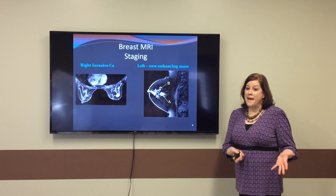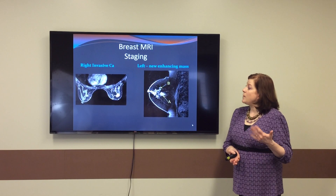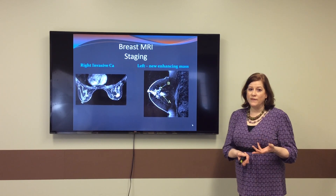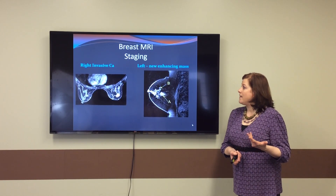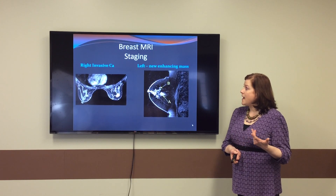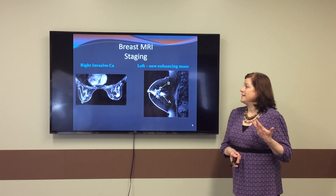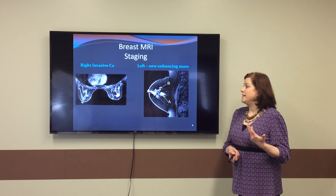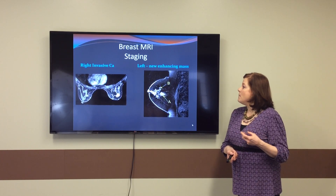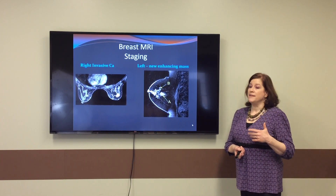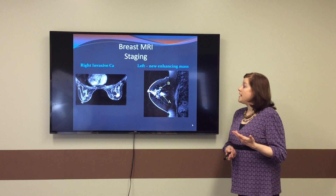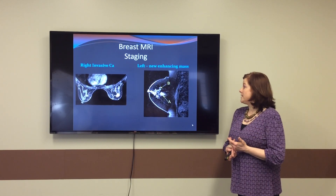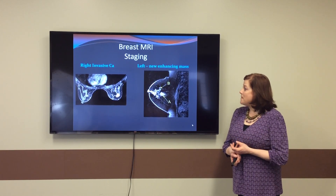The first thing we do when we have an abnormality like that is we proceed to a breast MRI to look for the extent of the cancer. As you can see on that same right breast, you can see that big abnormal cancer on her right side. But what we didn't expect to find was new enhancing masses — two of them — on her left breast, marked A and B.